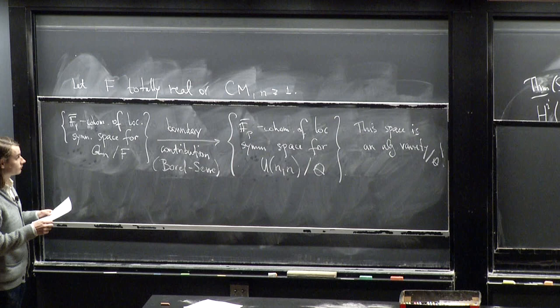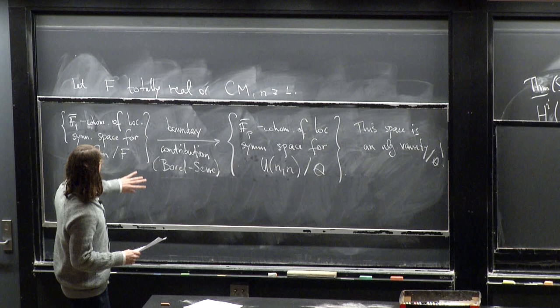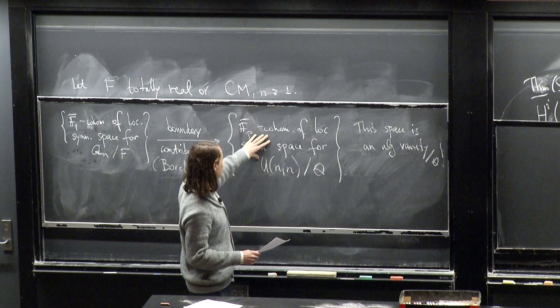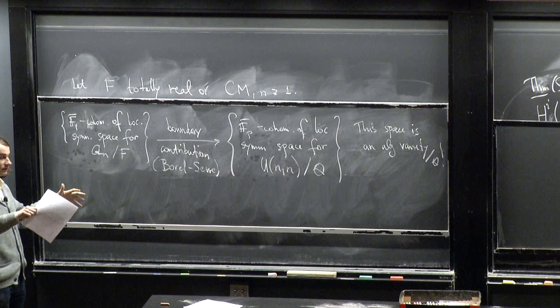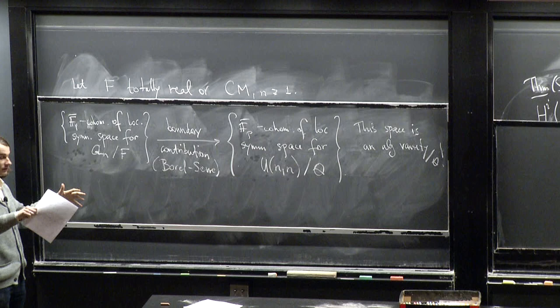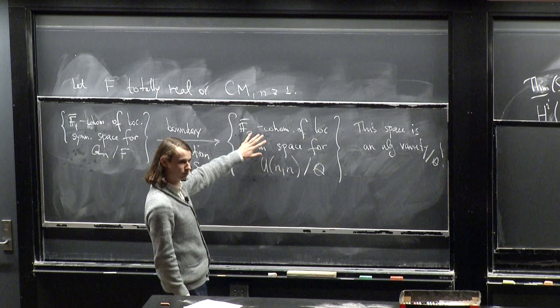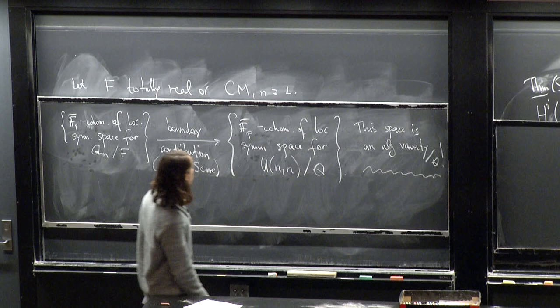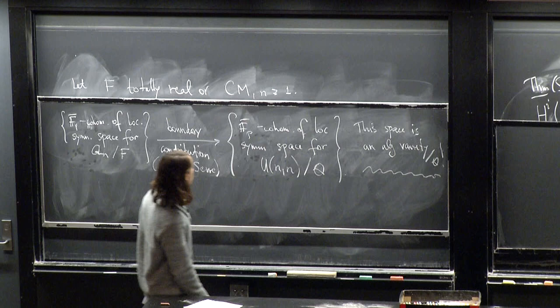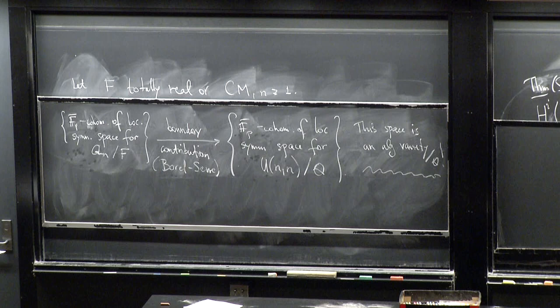What happens is that you have some kind of long exact sequence describing the cohomology of the space and the cohomology of the boundary. The crucial property of the compactification is that the embedding of the open part into the whole guy is a homotopy equivalence. From this long exact sequence, you see that any system of Hecke eigenvalues in the boundary will either contribute to compact support cohomology or to cohomology. Using Poincare duality, you can somehow reduce to either of the two.